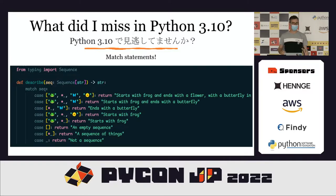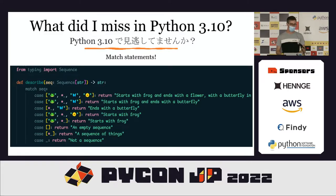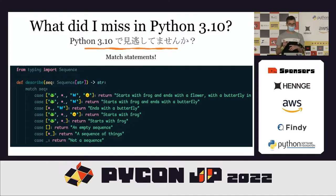For those wondering what you've missed in 3.10, there's a cool new feature called the match statement. People often incorrectly compare it to a switch statement from languages like C, but it's not a switch statement at all. With match, you can match sequences, dictionaries, classes, types, and attributes. The case keyword describes a pattern, and the match statement checks if that pattern matches — it was known as PATMA, pattern matching. It waterfalls through: if it doesn't match the first pattern, it can match the second and so on.